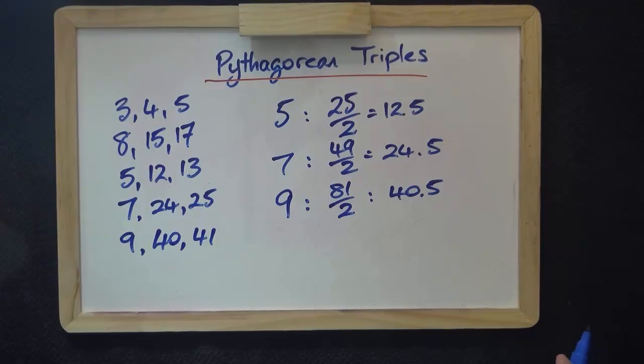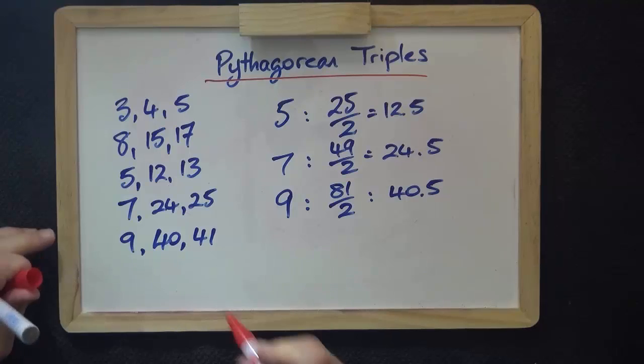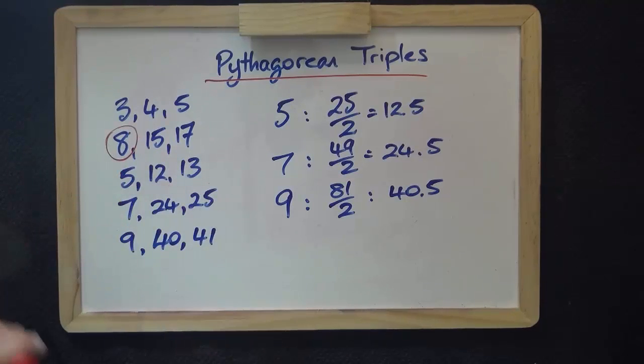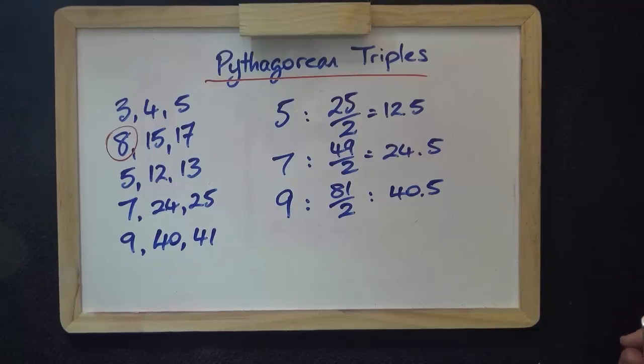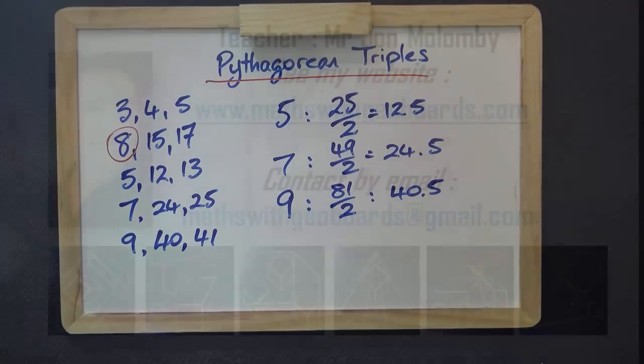Some Pythagorean triples, of course, start with even numbers. And I refer you to my worksheet for further work, worksheet 2, for exercises about finding side a and side b, which I discussed earlier.